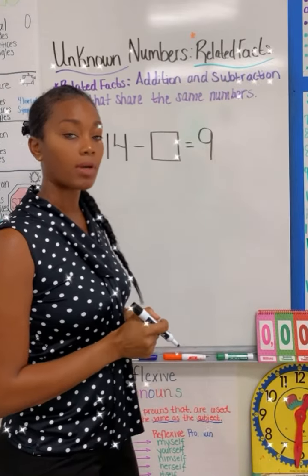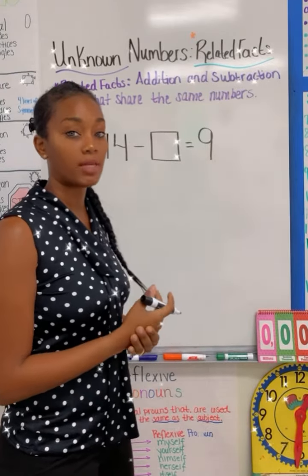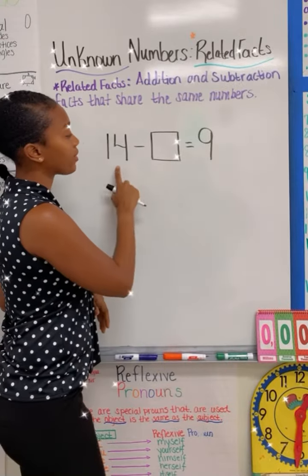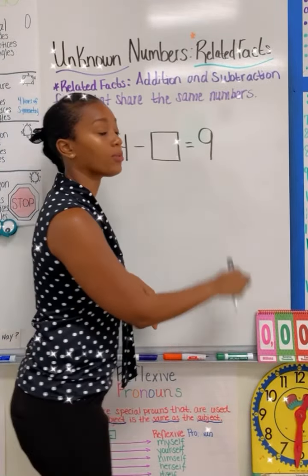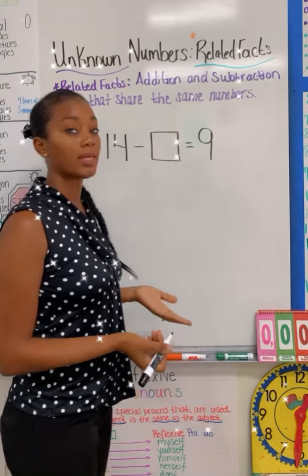We have another example with the unknown number, and this time we're going to find the related fact. Say we have 14 minus blank is equal to nine. I don't know what the answer is,